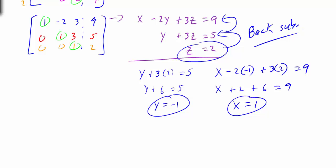Then going back to the first equation: x minus 2 times negative 1 plus 3 times 2 equals 9, so x plus 2 plus 6 equals 9, giving x equals 1. This is back substitution. You'll probably find this easier because we have eliminated the variables as we went through this process.